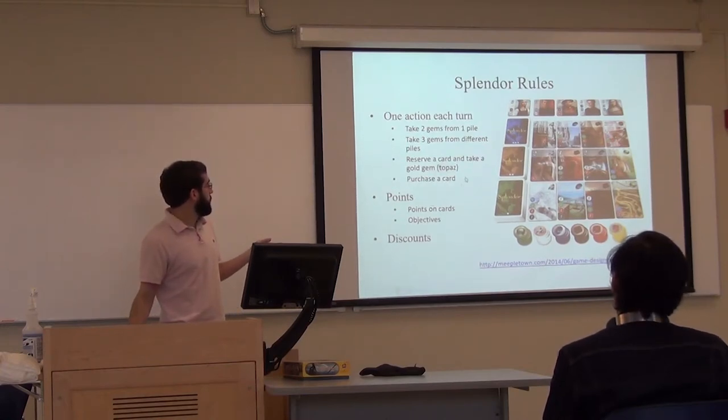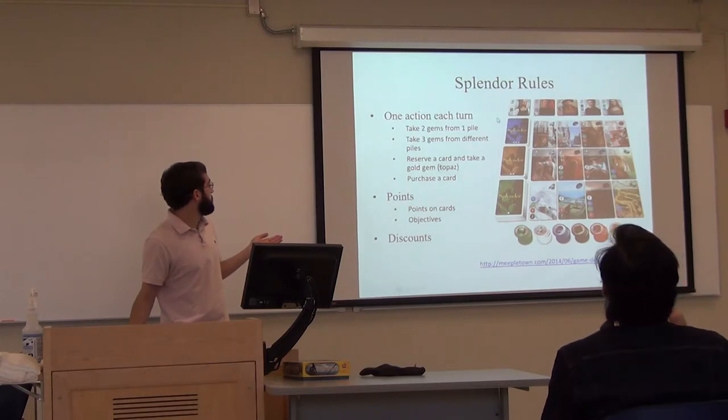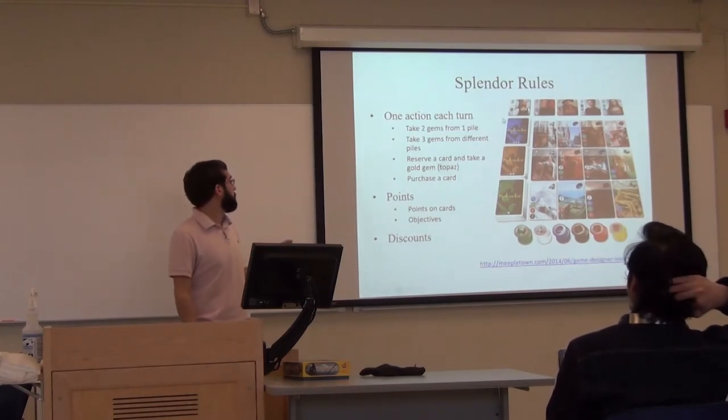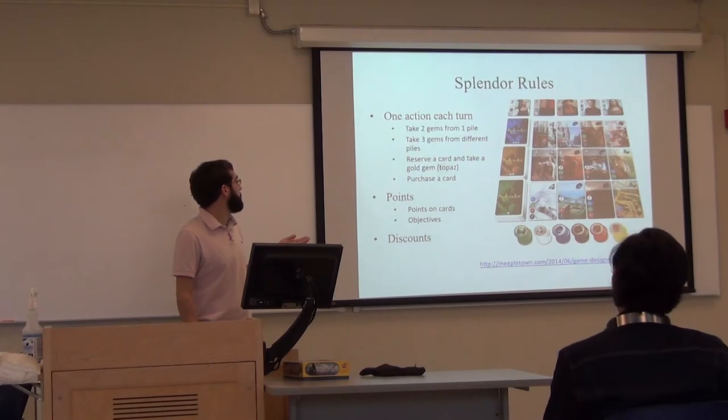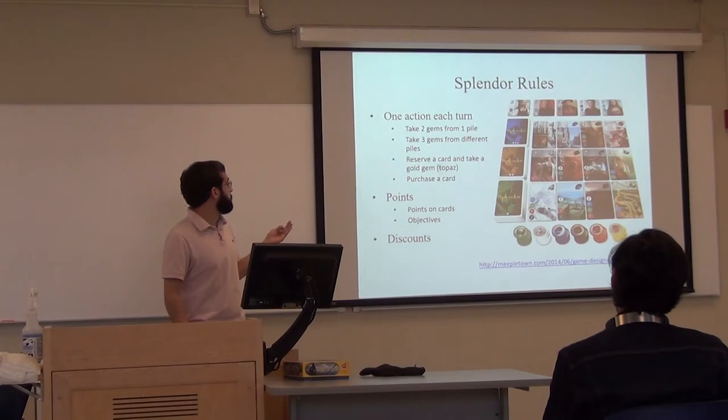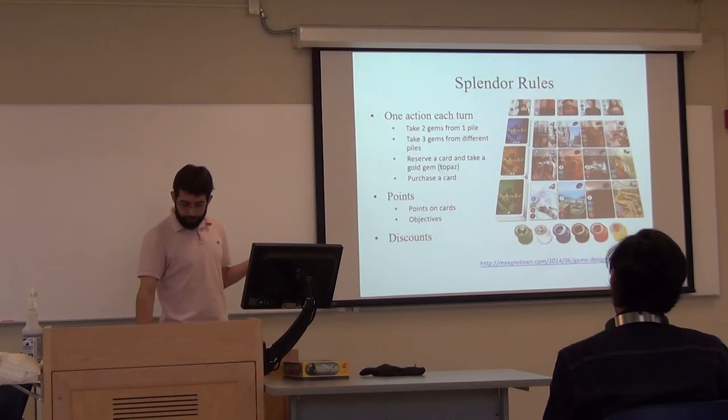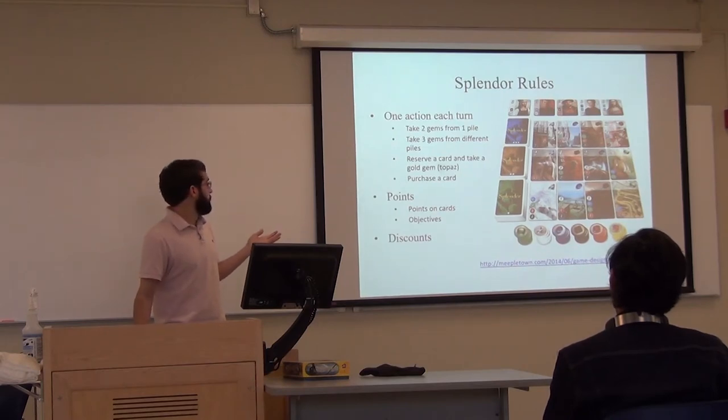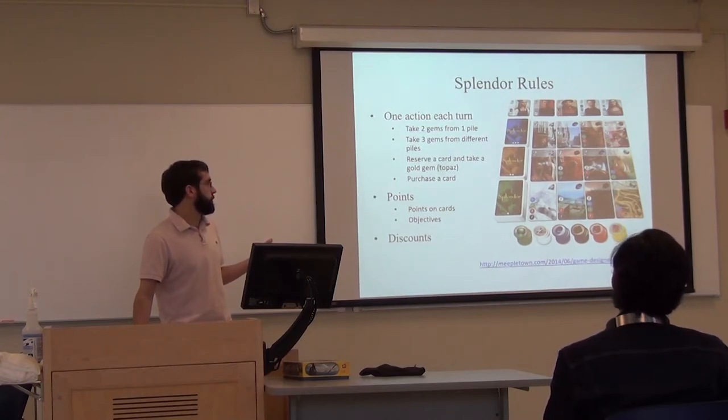One other feature of the game that makes it more interesting is the objectives or the noble cards here. These are all worth three points. You're awarded them once you collect that many cards of that color. For one of them on the left, you get three points when you get four black and four white cards. That is the sort of long-term planning that the AI has to take into consideration since it takes more than, say, at least 15 turns to start achieving those.